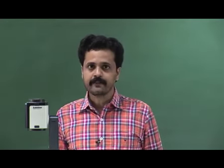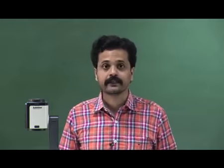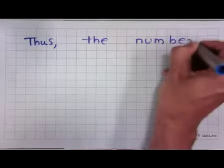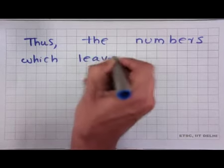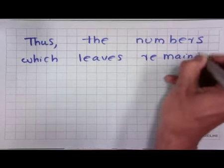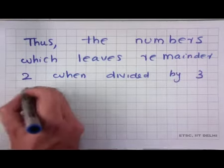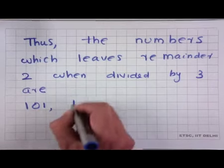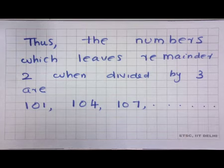Then the next number, namely 102, will be divisible by 3. 103 will leave remainder 1 when divided by 3, whereas 104 will leave remainder 2 when divided by 3. Thus, the three-digit numbers which leave remainder 2 when divided by 3 are 101, 104, and so on.